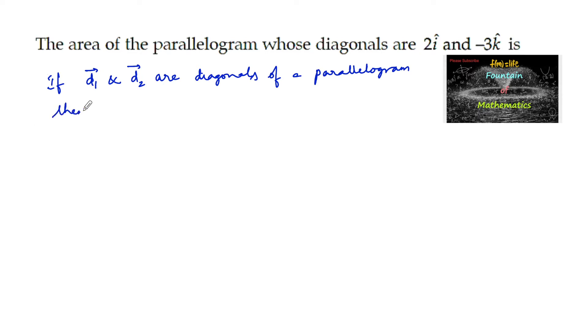then its area is given by half mod of d1 cross d2. Here, let us consider d1 equals 2i cap and